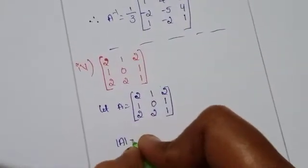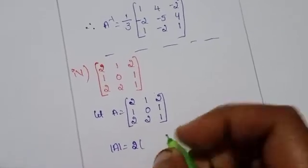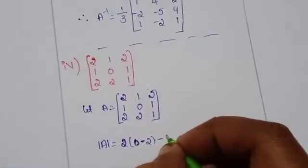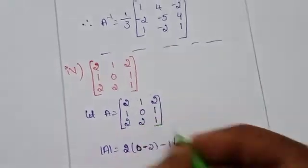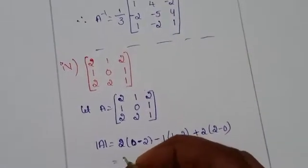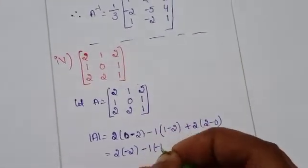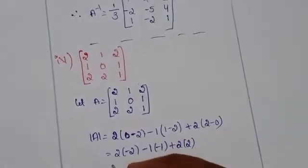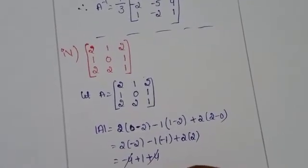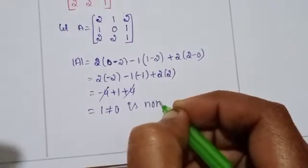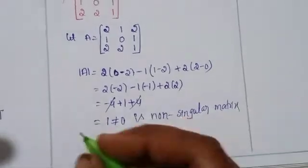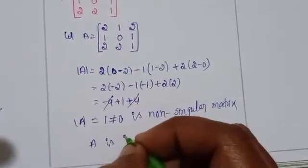Det(A) equals 2 times (0 minus 2) minus 1 times (1 minus 2) plus 2 times (2 minus 0). That gives 2 times minus 2, minus 1 times minus 1, plus 2 times 2, which equals minus 4 plus 1 plus 4 equals 1. Since det(A) equals 1, it is not equal to 0, so it is a non-singular matrix and A is invertible.